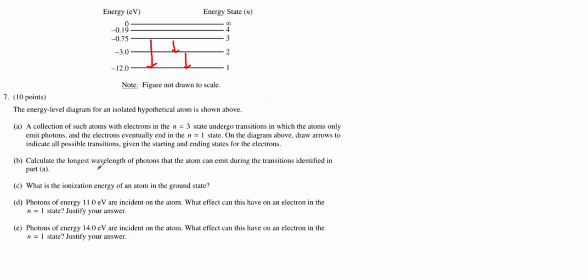Part B, we want to calculate the longest wavelength of photons that the atom can emit. Your longest wavelength will always be associated with your lowest energy level. Because remember, energy is directly related to frequency or inversely related to wavelength. So if we have a large wavelength, we have a low energy. Ultimately, we need to first figure out which one of these three photons will be the lowest energy.